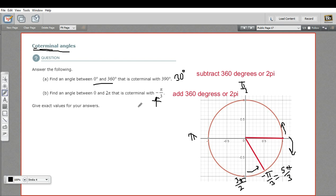So our coterminal angle here is going to be 5 pi over 3. But let's verify this by, since this is a negative value, let's add 2 pi. So negative pi over 3 plus 2 pi. And let's rewrite this so that it has the same denominator. So 2 pi is the same as 6 pi over 3.